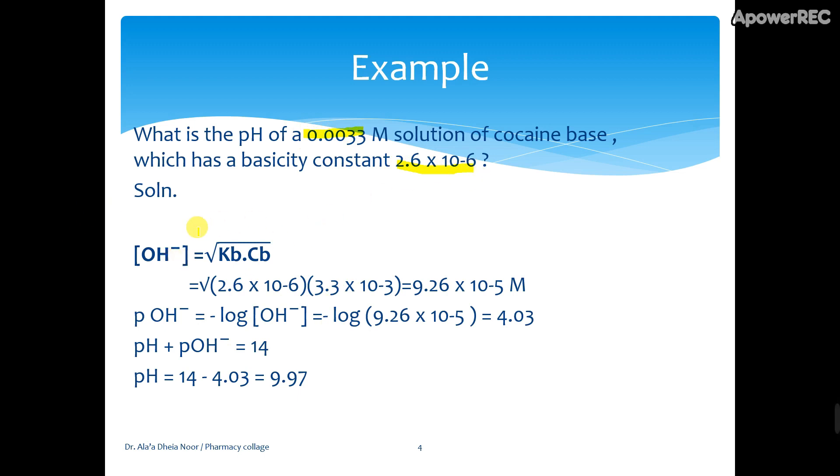Since it's a weak base, we calculate OH-. From OH- we calculate pOH, which is minus logarithm of the hydroxyl ion. Then pH plus pOH equals 14, so we can find the pH.